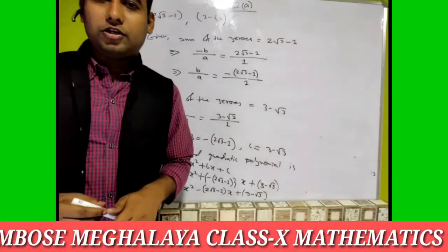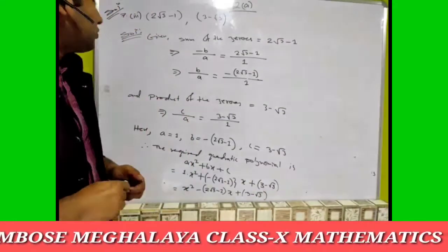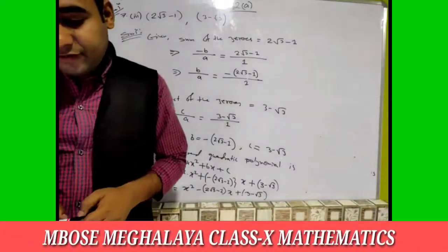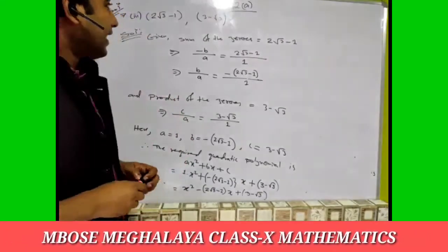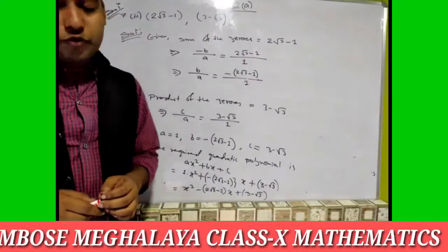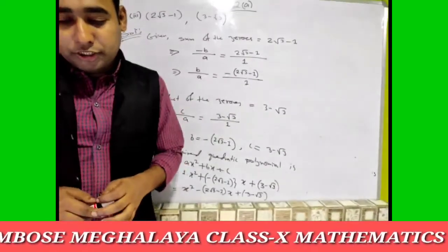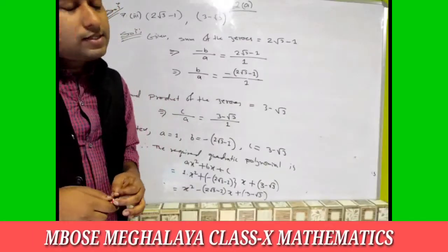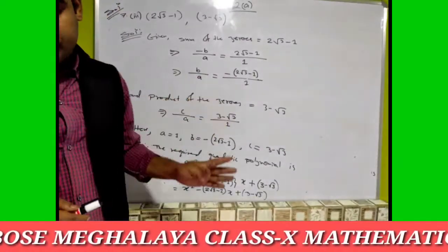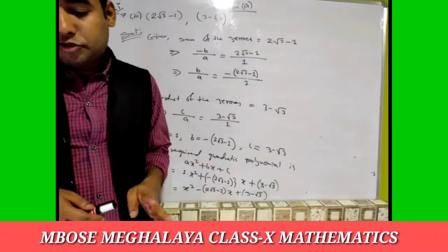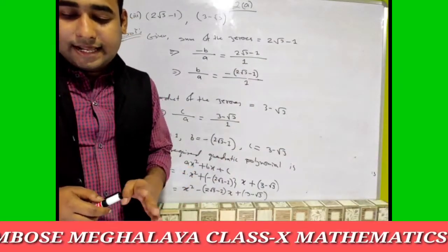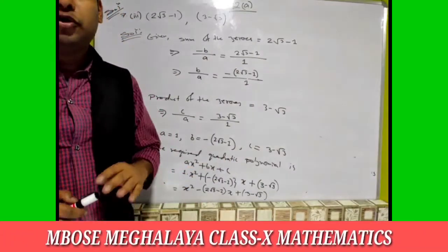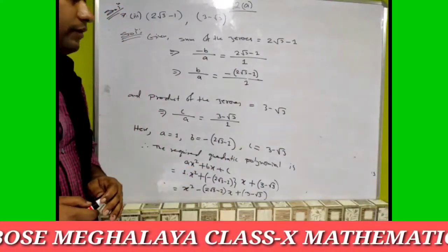I hope all of you understood. Today we finished Exercise 2A, question number seven — sub-number one, sub-number two, and sub-number three. In the next class we will do question number eight. Thank you very much.